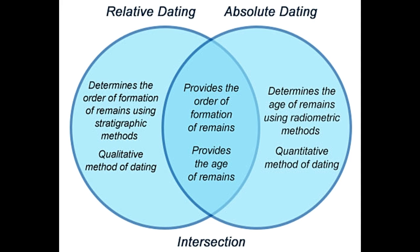A Venn diagram depicts both dating methods as two individual sets. The area of intersection of both sets depicts the functions common to both. When we observe the intersection in this diagram depicting these two dating techniques, we can conclude that they both have two things in common: 1. Provide an idea of the sequence in which events have occurred. 2. Determine the age of fossils, rocks, or ancient monuments. Although absolute dating methods determine the more accurate age compared to the relative methods, both are good in their own ways.